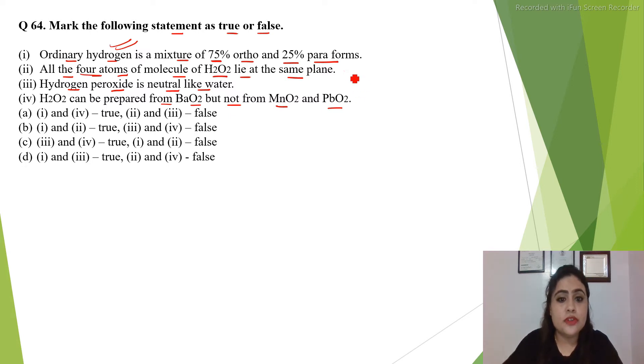The statement is wrong because the correct structure of hydrogen peroxide is this. So here the 2 oxygen atoms is lying in 1 plane and hydrogen is lying in 1 plane and the other hydrogen is lying in another plane. You can see this 2 oxygen atom and hydrogen is lying in 1 plane and this hydrogen is lying in another plane.